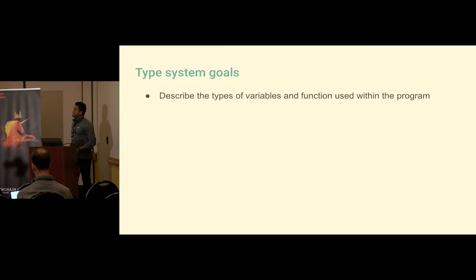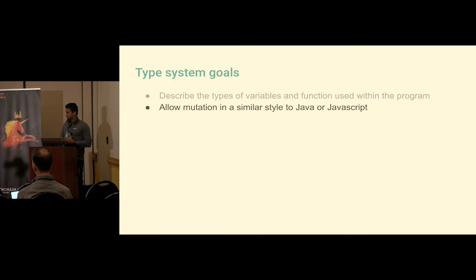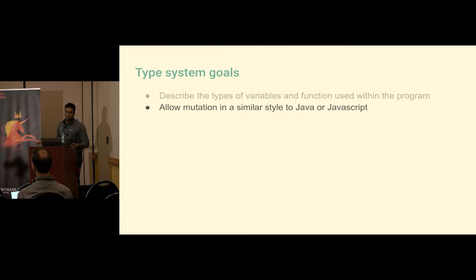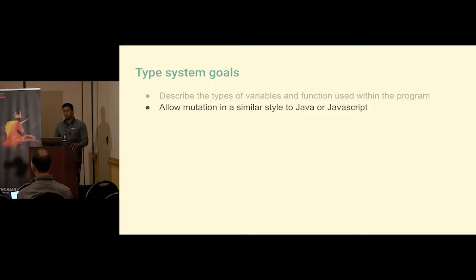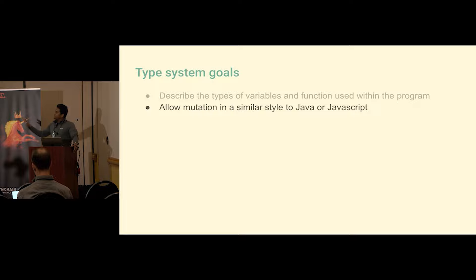A little bit about type system design goals. We want a type system that describes the values you work with in the programming language. By default, when you declare a variable — not simple types like integers and booleans, but structural values like records, maps, tuples, and arrays — they're all mutable in Ballerina. But there's a `readonly` keyword; when you use that, the value becomes immutable. So we support both mutable and immutable types and values.